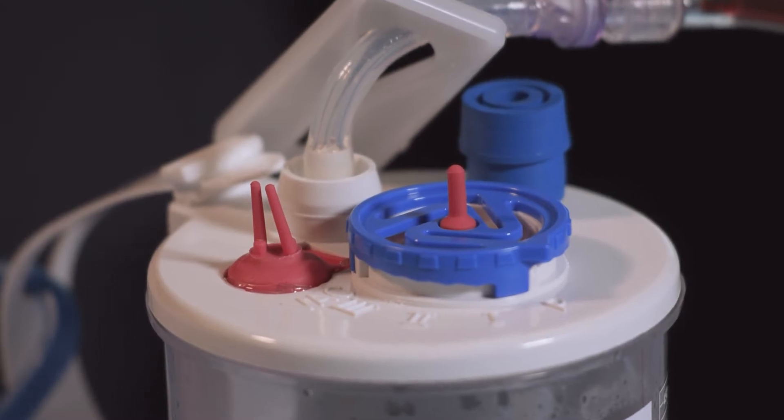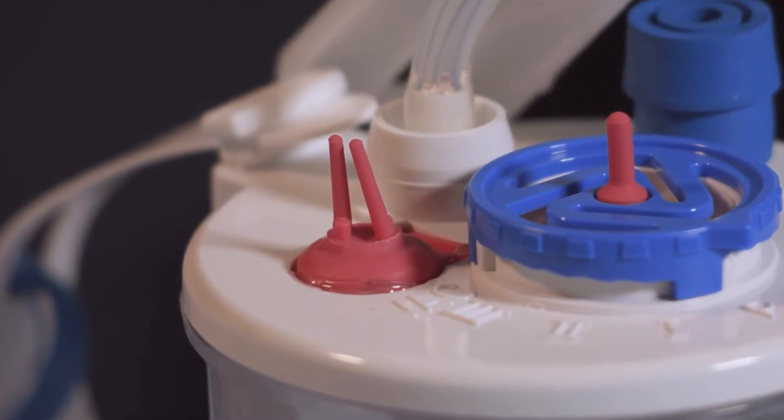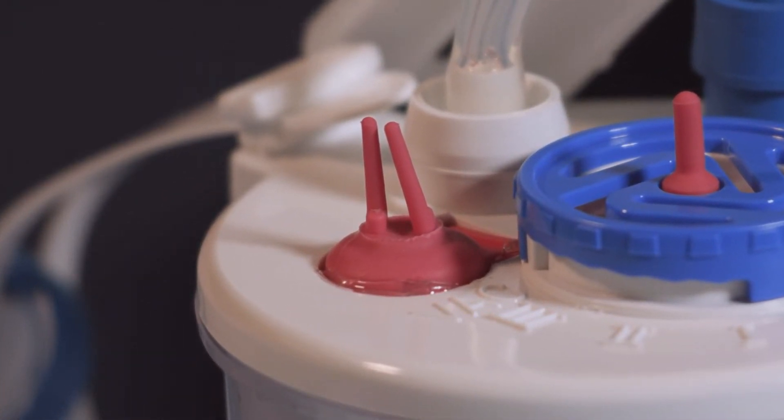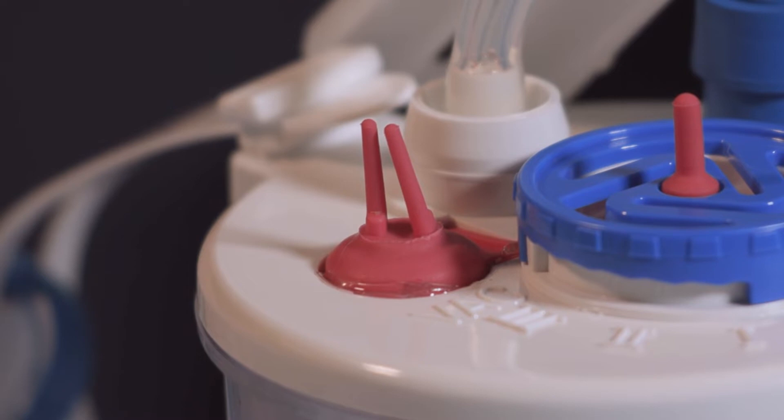If the vacuum indicator is not showing a tight V configuration, the canister needs to be re-vacuumed. This can be done at any time.